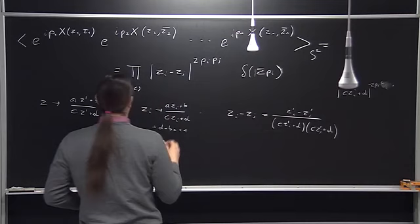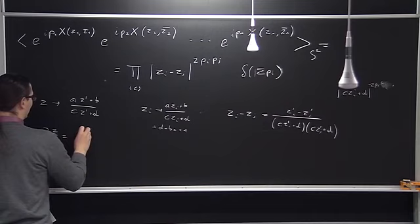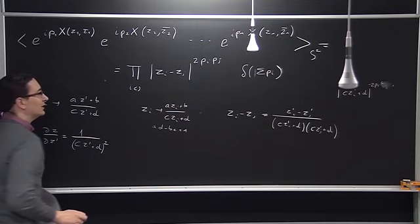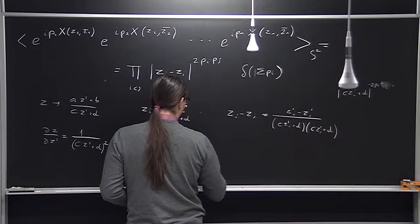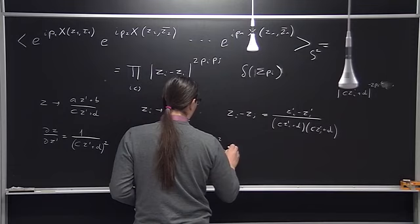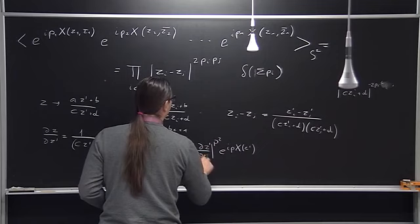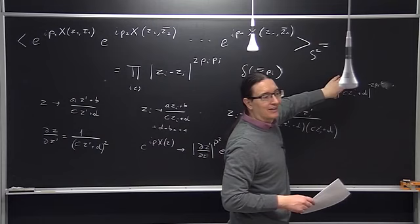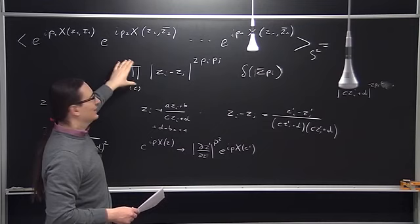This extra factor is correct because the Jacobian of this transformation is just 1/(cz' + d)^2. The vertex operators are supposed to transform with some powers of the Jacobian, so these extra factors cancel against the powers of the Jacobian. This verifies that this expression is sensible and that this transformation law is sensible.